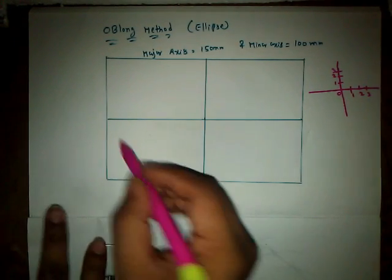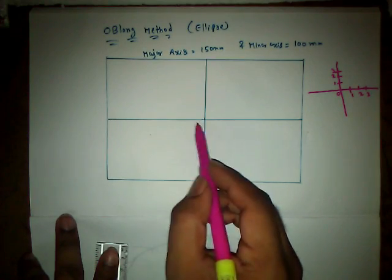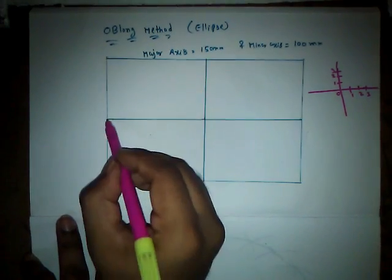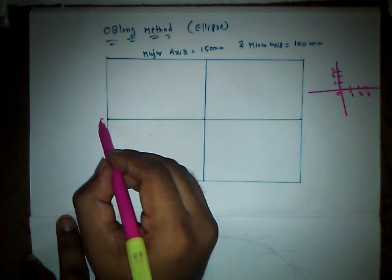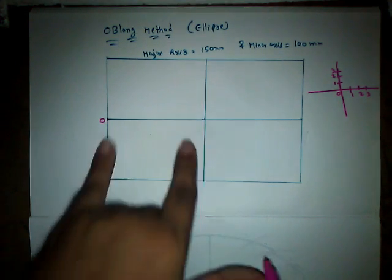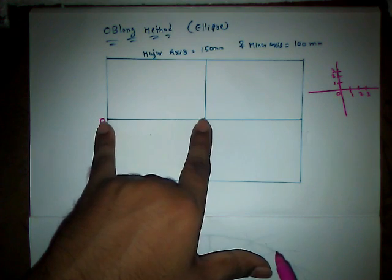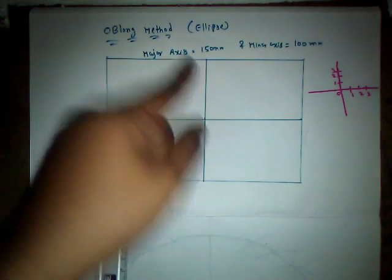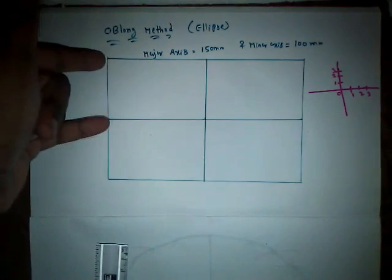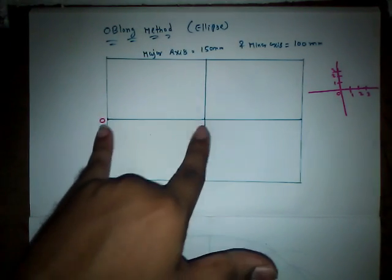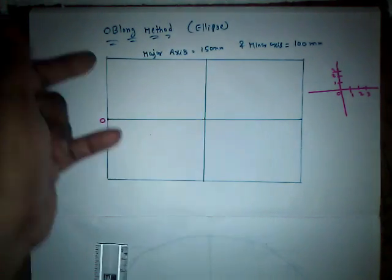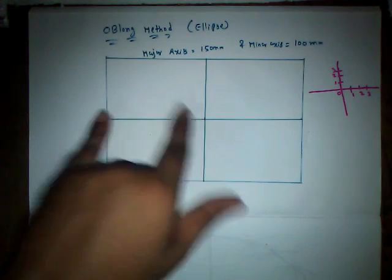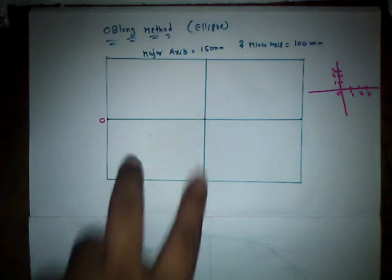In the same manner, if we consider this as x-axis and this one as y-axis, this is going to be our center. Here we need to divide the half of the Major Axis — this is the complete Major Axis, so this is half of the Major Axis part and this is our Minor Axis length. We need to divide the x-axis and the y-axis into equal number of parts.